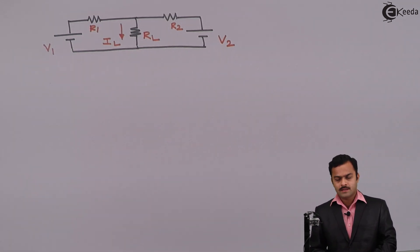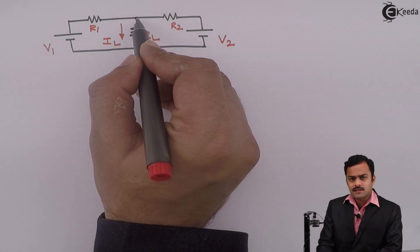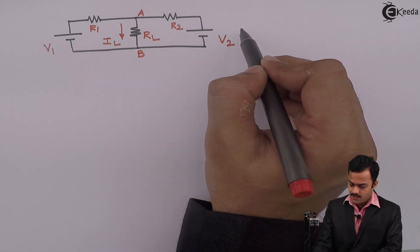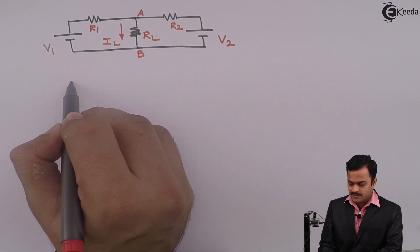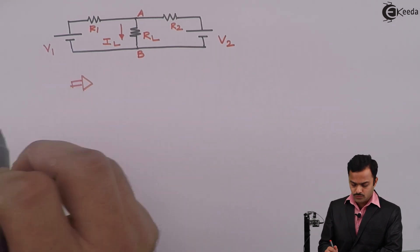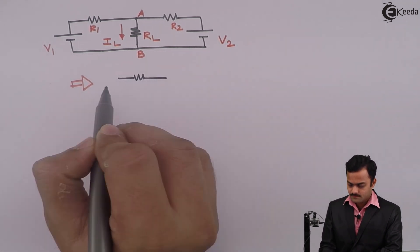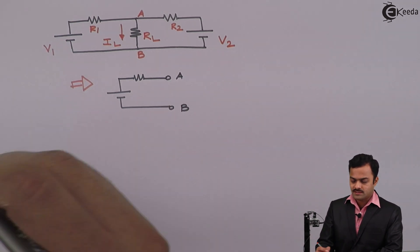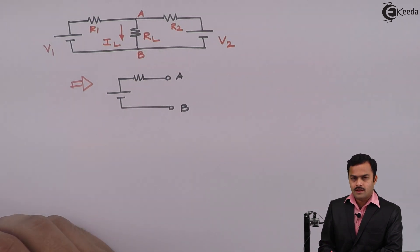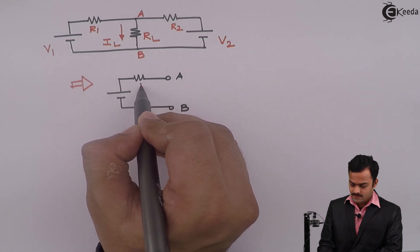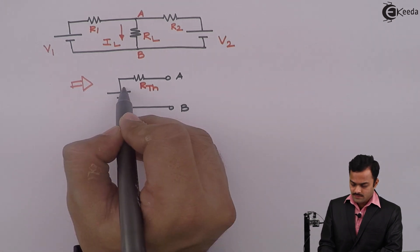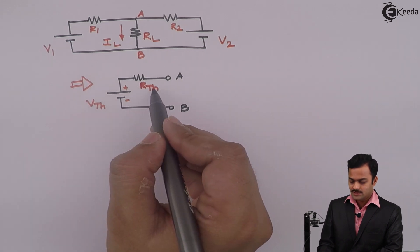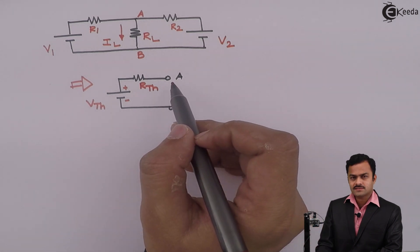What the statement is saying is: wherever the load resistance is connected, we focus on those two terminals and do the analysis such that this circuit will be reduced into a simple circuit. Between points A and B — because the load resistance is connected between A and B — we will consider this resistance as Rth and this voltage as Vth, which stands for Thevenin's voltage and Thevenin's resistance.